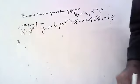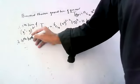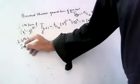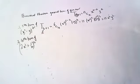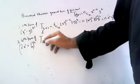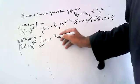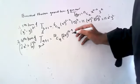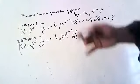Second question: what is the 10th term of (2x² + 1/x)¹²? For the 10th term, r = 9. So T₁₀ = 12C9 · (2x²)^(12-9) · (1/x)^9 = 12C9 · (2x²)³ · (1/x)⁹.